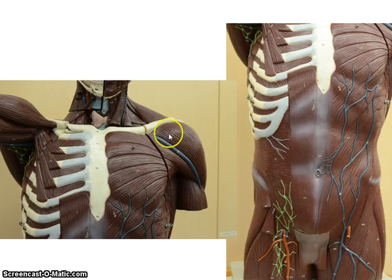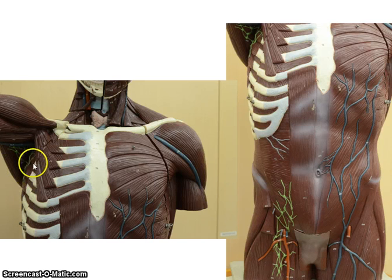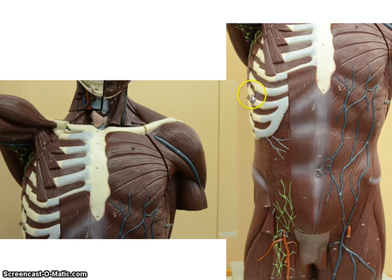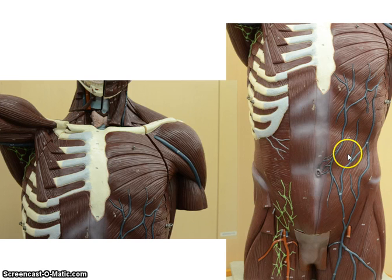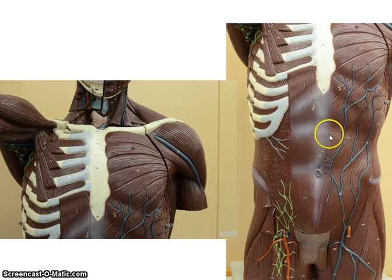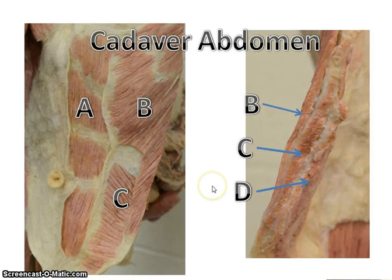Let me go through those again. We have the deltoid, the pectoralis major, the pectoralis minor, the serratus anterior which runs on the lateral portion, the intercostals — external intercostals run in this direction, internal intercostals run in the opposite direction — the diaphragm, the rectus abdominis, the external obliques, the internal oblique which you can't see on this model, and then the deepest of the abdominal muscles, the transversus abdominis. Let me go to the cadaver model just to show you so you can see some of these layers.